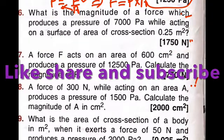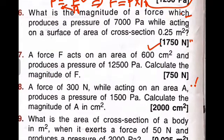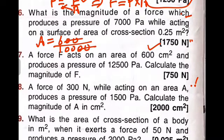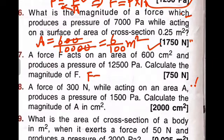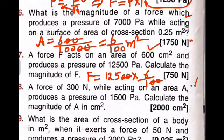The next problem: a force F acts on an area of 600 centimeter square. Converting to meter square: 600 ÷ 10,000 = 6/100 meter square. It produces a pressure of 12,500 Pascal — calculate the force. Force equals pressure multiplied by area: 12,500 × (6/100). Cancelling, 125 × 6 = 750. So the answer is 750 Newton.